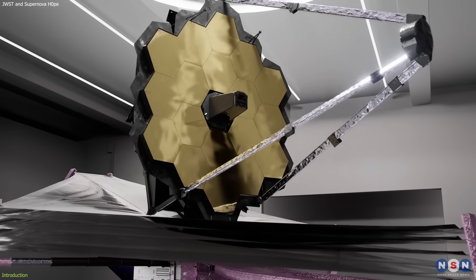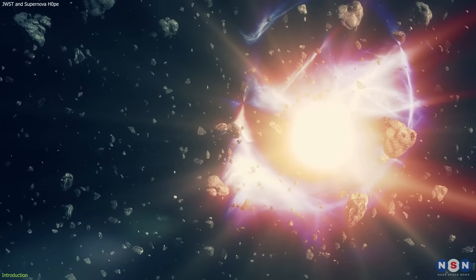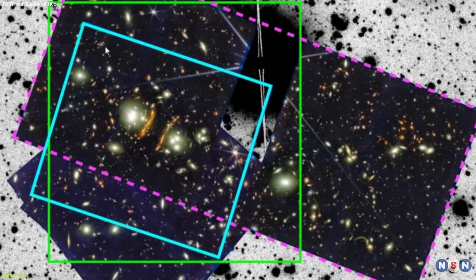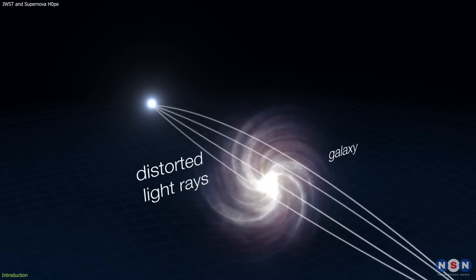But what if I told you that a single supernova, observed by the most powerful telescope ever built, could help solve this mystery? And not just any supernova, but a supernova that appeared in three different images due to a cosmic phenomenon called gravitational lensing.